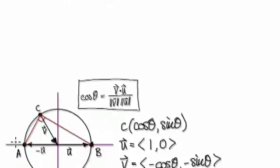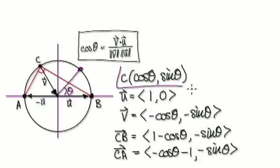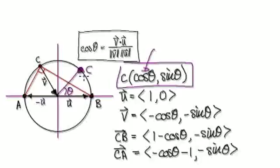So to do this, the location of C will always be given by (cos θ, sin θ). So no matter what theta is, the location of C will always be given by this. Because if you look at this, suppose C is here, then this distance here will be cos theta, and the height will be sin theta.